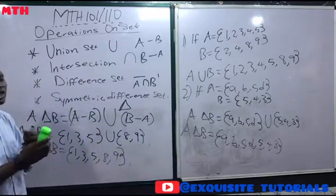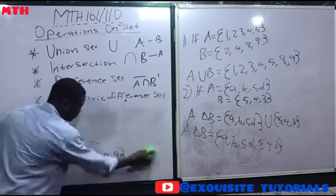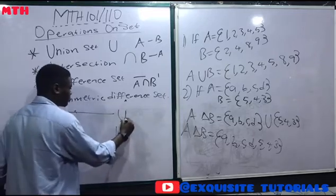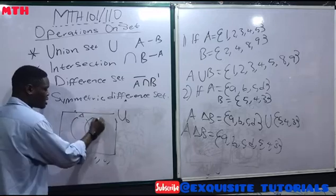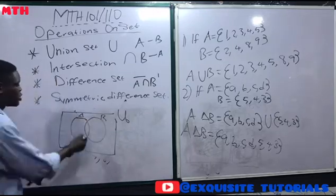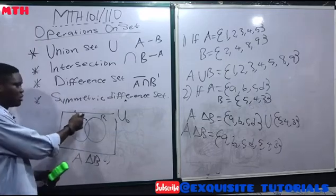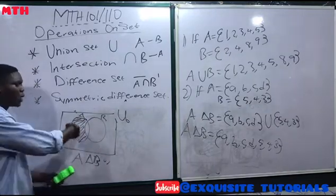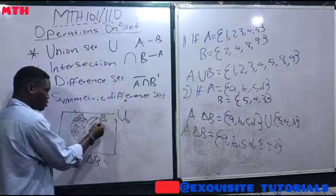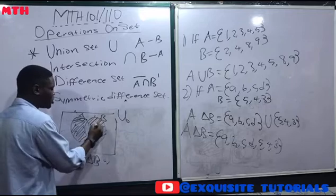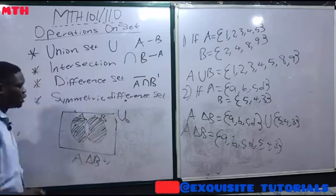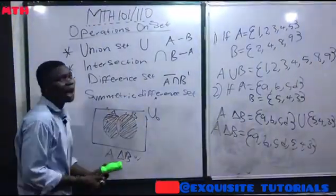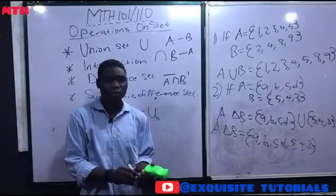Let me show you how the symmetric difference looks on a Venn diagram. We have the universal set with circles A and B. The symmetric difference of A and B shades the left part of A (elements in A not in B) and the right part of B (elements in B not in A). The overlapping intersection part is not included. So we shade the two outer regions of both circles. That will be all for this video — please like and subscribe to our YouTube channel. Thanks for watching.